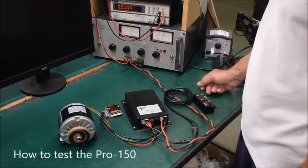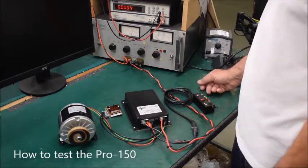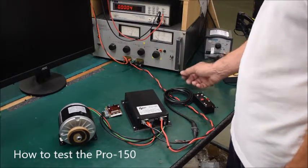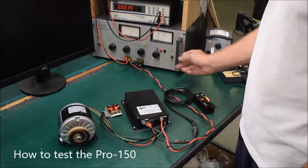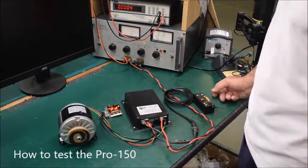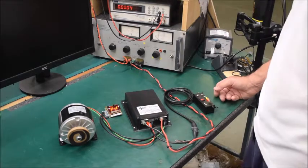Today we're going to take a look at the Pro 150. This controller has an optional display programming module and in normal operation this is what should happen. When you turn the ignition switch on, the Pro 150 will do some self-checks and then display PD which means it's in power down mode and ready to go.